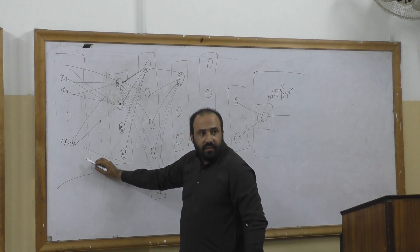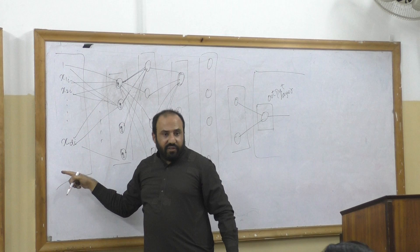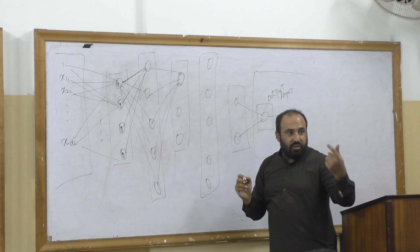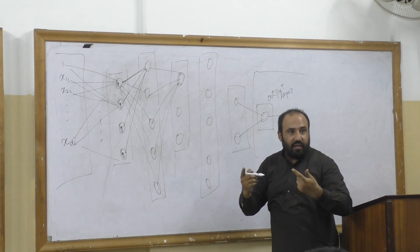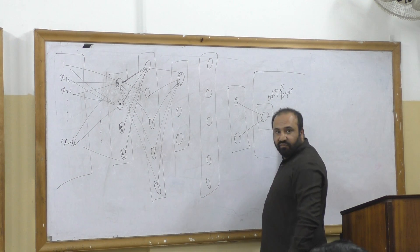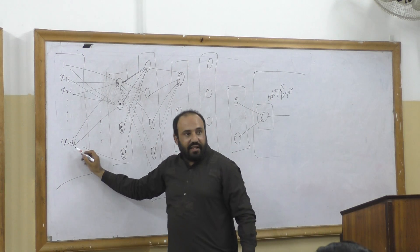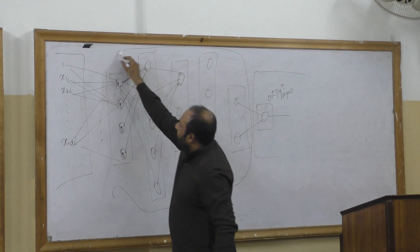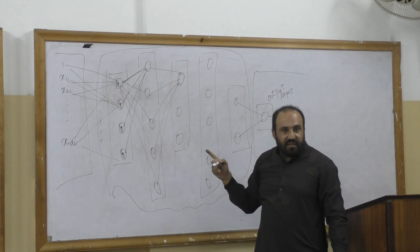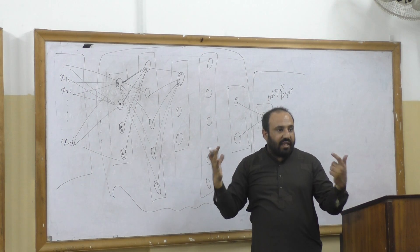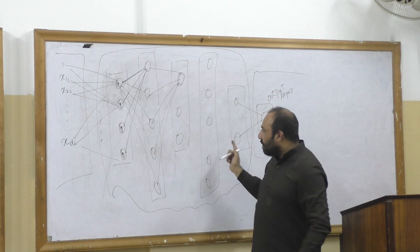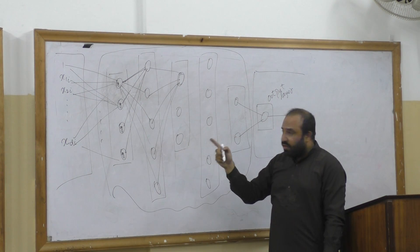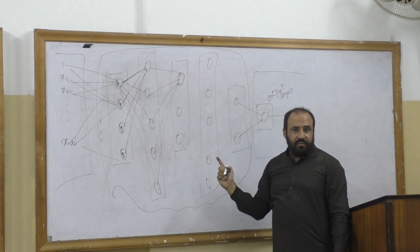The input layer sees the input features. The output layer sees the label — it sees something from the data. However, these layers in between do not see the data directly. That's why all these layers are called hidden layers. With respect to data, these layers are hidden. So in this particular case, in this six-layer neural network, five layers are hidden.